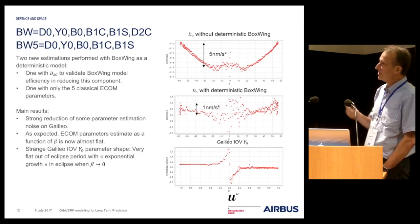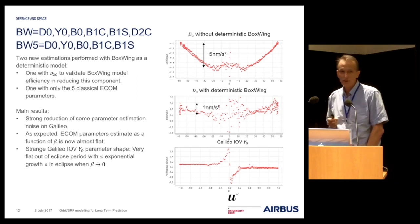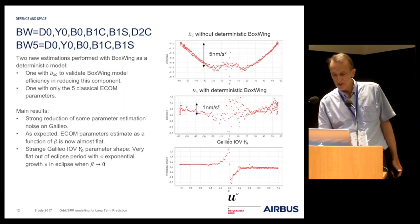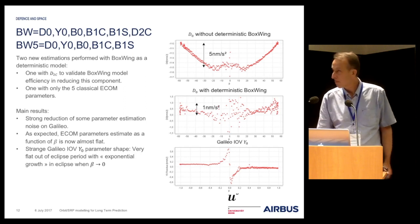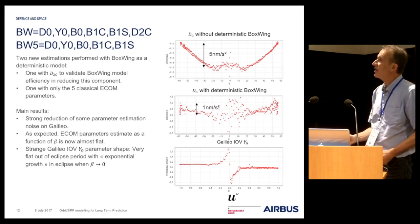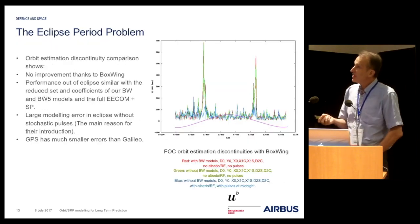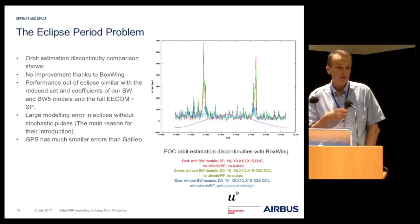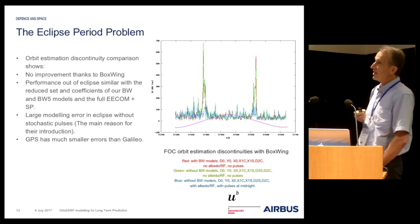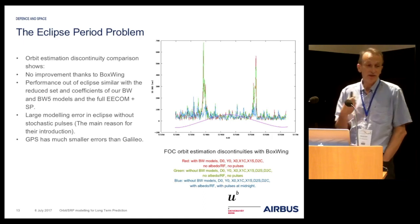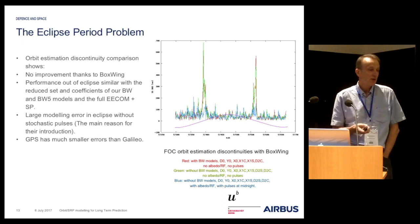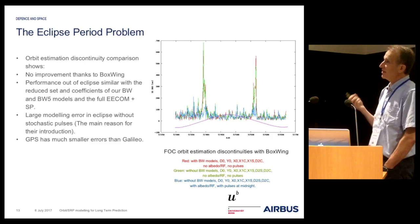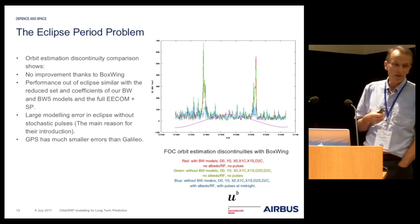Something is very noticeable on the last curve, which is the Galileo IOV Y0 coefficient. We can see an exponential growth when the sun crosses the orbital plane. To assess performance, we performed orbit estimation discontinuity analysis. We can see that the boxwing model does not help at all to improve the orbit discontinuity, and the performance during the eclipse period is very bad.